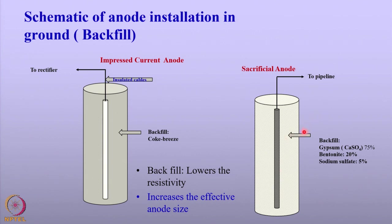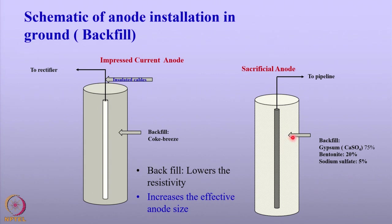Because the current has to move through the soil from the anode, the surrounding area of the anode should be highly conducting. The soil many times has very high resistance, so to lower the resistance, backfill is normally employed. The schematic shows impressed current anodes and sacrificial anodes surrounded with backfill. In the case of sacrificial anodes, the backfill consists of gypsum, bentonite, and sodium sulfate. For impressed current systems, the backfill is mainly made up of coke breeze. Coke breeze is not used for sacrificial anodes because it can cause galvanic corrosion between the sacrificial anode and the coke breeze.